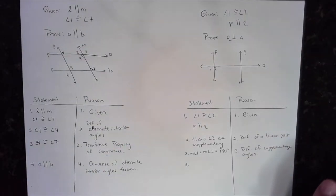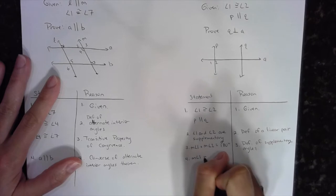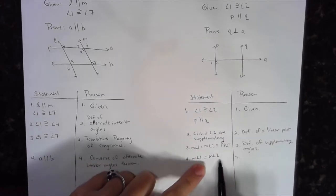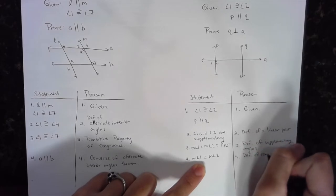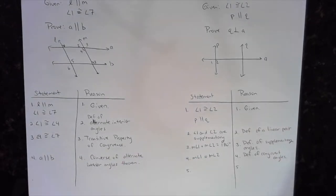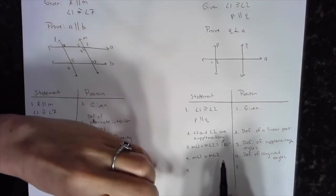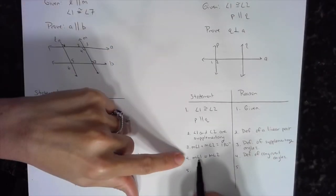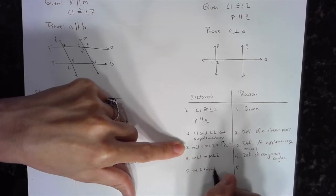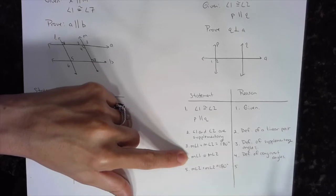I need to show these are 90-degree angles. First I'll write: measure of angle one equals measure of angle two, because if angle one is congruent to angle two, their measures are equal — that's the definition of congruent angles. Then I'll use substitution: replacing measure of angle one with measure of angle two in the equation, giving me measure of angle two plus measure of angle two equals 180 degrees. The reason is substitution.